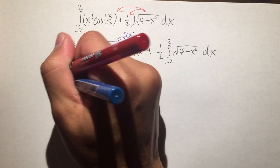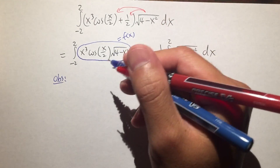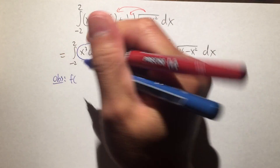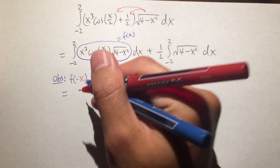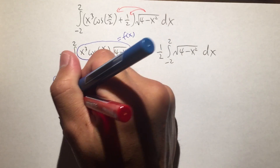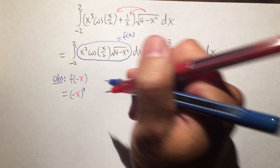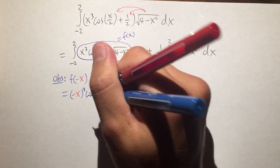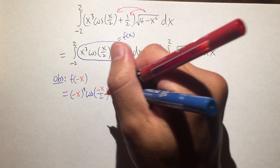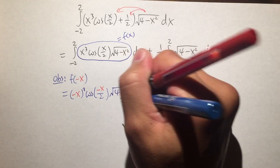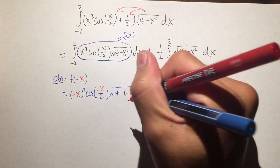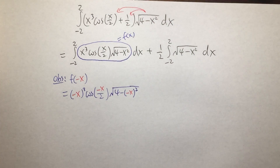We can say that this is a function — I'll call it f of x. Then we make an observation: we plug in negative x for all the x's and see what happens. So f of negative x gives us parentheses negative x to the third power, times cosine of negative x over 2, multiplied by the square root of 4 minus parentheses negative x squared.